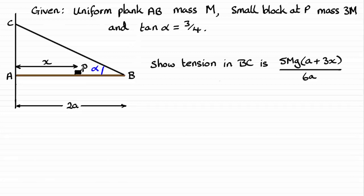The plank is in equilibrium in a vertical plane which is perpendicular to the wall, and the angle between the rope and the plank is alpha, where tan of alpha equals three quarters. The plank is modeled as a uniform rod and the block is modeled as a particle, and the rope is modeled as a light inextensible string. Using this model, we've got to show that the tension in that rope is given by this equation here.